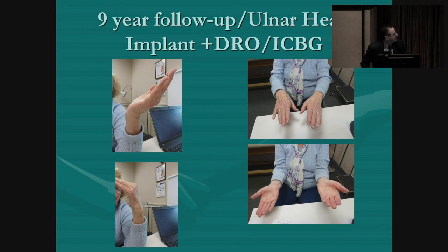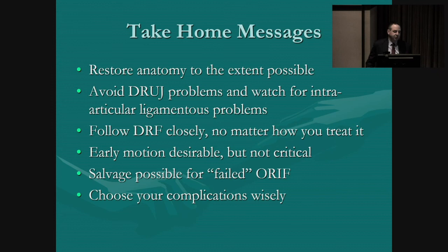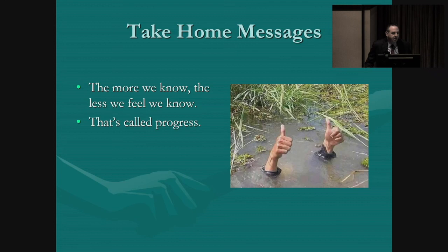The take-home messages: restore anatomy, avoid distal radio ulnar joint problems, watch for intra-articular ligamentous problems, follow distal radius fractures closely no matter how you treat them, early motion is desirable but probably not critical, and there is salvage for the failed open reduction internal fixation. We should remember to choose our complications wisely. Treatment of distal radius fractures is kind of a swamp, and I hope what I've shared will help you avoid some of the alligators out there. Thanks a lot for your attention.